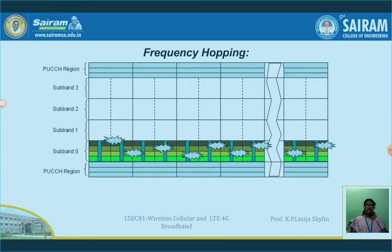If the frequency changes, a large portion of data would be able to avoid the impairment. If impairment happens here, the same information can be shifted to some other frequency so that the impairment can be avoided. For that reason, I am going to use two types of frequency hopping: one is inter-subframe frequency hopping, and another one is intra-subframe frequency hopping.